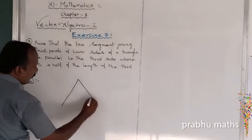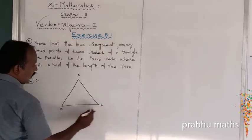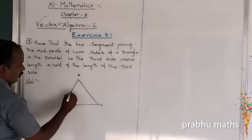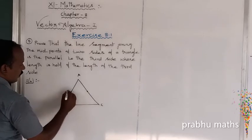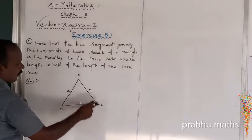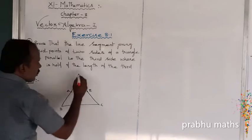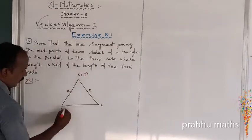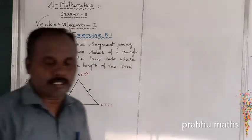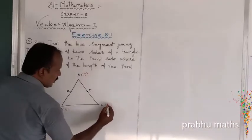Let us draw the diagram. Take triangle ABC. The midpoint of AB is called D, and the midpoint of AC is called E. So D is the midpoint of AB and E is the midpoint of AC. The position vectors of A, B, and C are small vectors a, b, and c respectively.